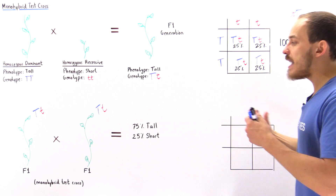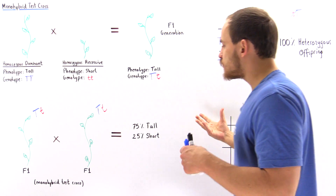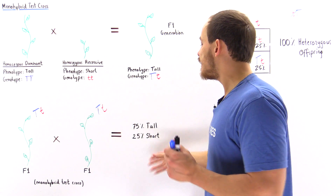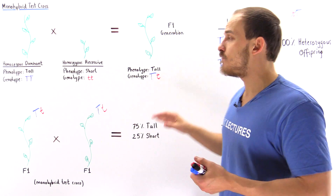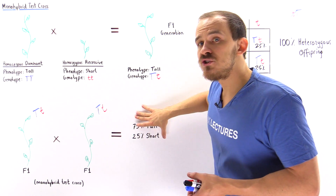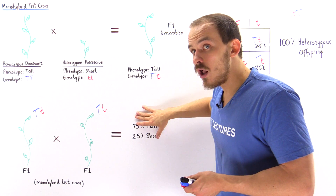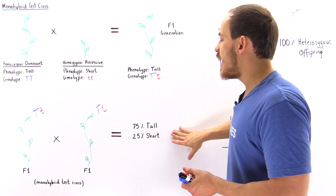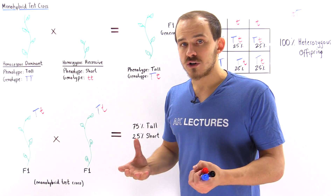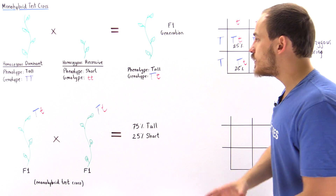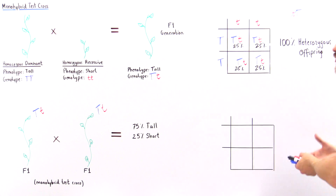What Mendel found was that about 75% of the time the individuals were tall, but 25% of the time the individuals were short. Let's confirm this by using the Punnett square.